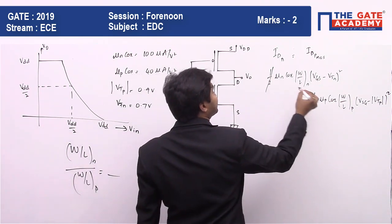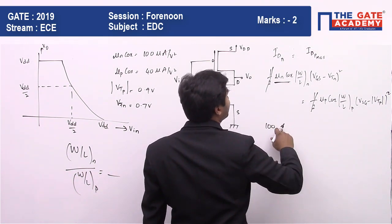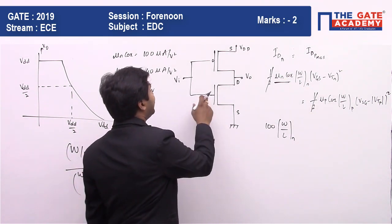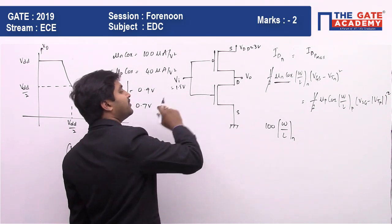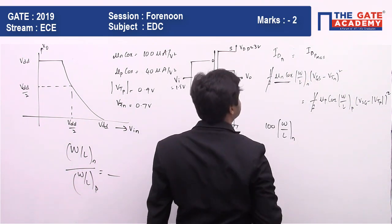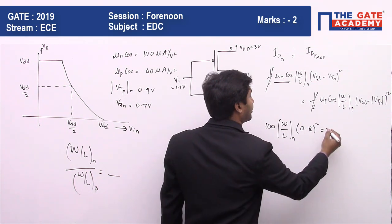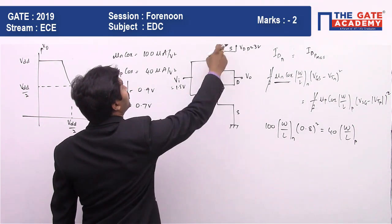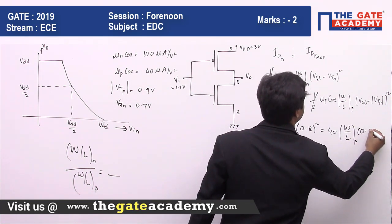The 1/2 cancels on both sides, and the microampere units cancel. For NMOS: gate is at VDD/2 = 1.5 V, source is grounded, so VGS = 1.5 V and VTN = 0.7 V, giving (1.5 − 0.7)² = (0.8)². For PMOS: VSG = VDD − VDD/2 = 1.5 V, and |VTP| = 0.9 V, so (1.5 − 0.9)² = (0.6)². The equation becomes: 100 · (W/L)N · (0.8)² = 40 · (W/L)P · (0.6)².